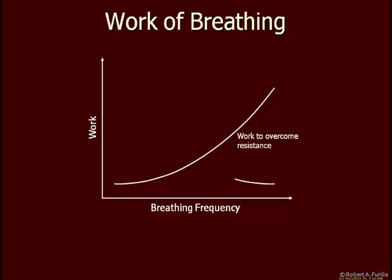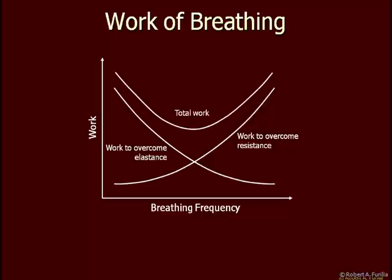If I breathe slower, I must also breathe deeper, and as I breathe deeper, I'm increasing the work to stretch the lung. However, the work of breathing is the sum of these two impediments. The total work shows a U-shaped curve, and the least amount of work occurs in the valley, which also occurs at the point where these two lines intersect. So if we breathe faster and shallower, we see increased work of breathing; if we breathe slower and deeper, we also see increased work. The optimal breathing frequency is right at that minimum.